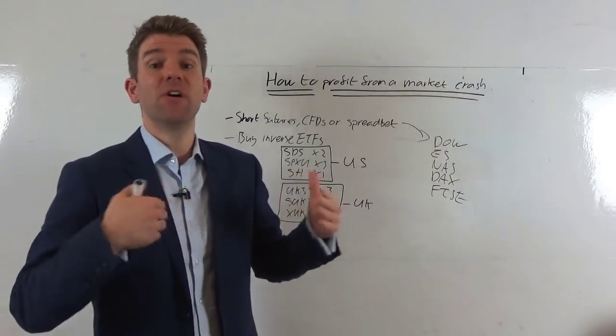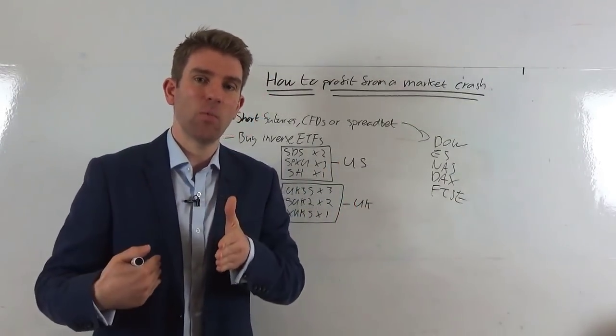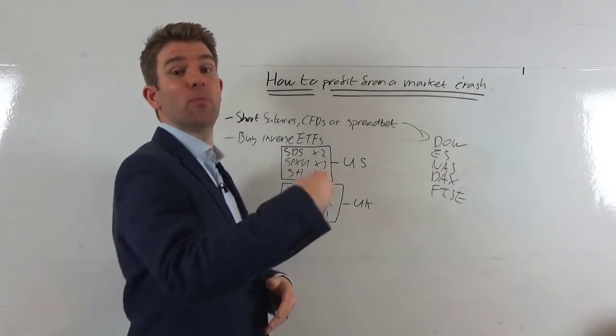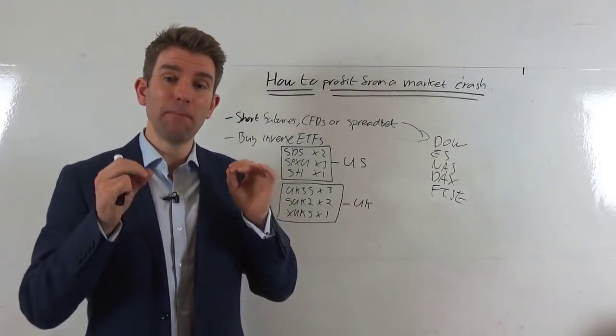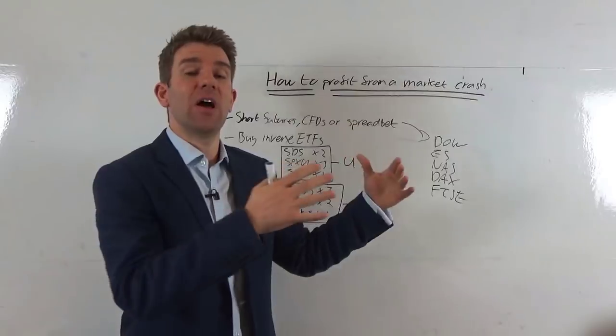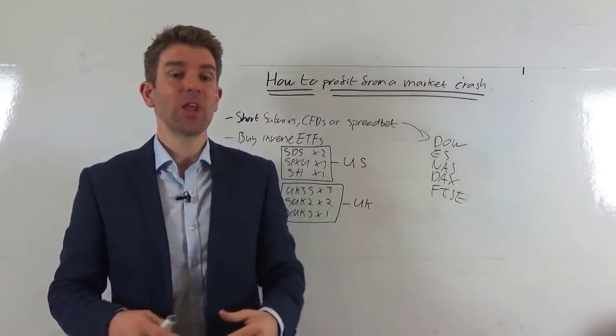We also have inverse ETFs which inversely track the performance. So FTSE is up one percent all day, the ETF will be down one percent. But what that does mean is if the FTSE is down one percent in the day, that ETF will be up one percent in the day. So we can buy this inverse ETF which means it will go up as the underlying market it's mirroring goes down.